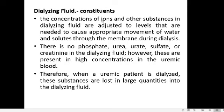The concentration of ions and other substances in the dialyzing fluid is adjusted to ensure only appropriate movement of water and solutes across the membrane. The dialyzing fluid contains no phosphate, urea, urate, sulfate, or creatinine, so all these substances diffuse from the blood into the dialyzing fluid. Since these substances are at high concentrations in uremic patients' blood, they are lost in large quantities into the dialyzing fluid — ensuring only waste passes through and nothing useful is lost.